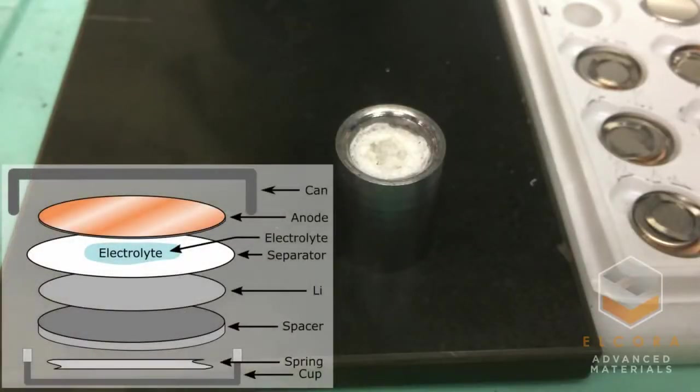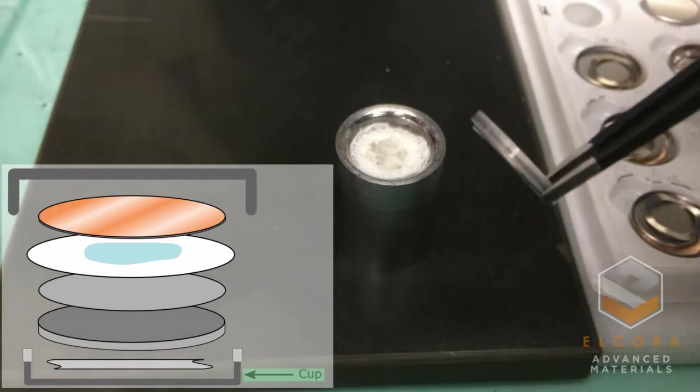The type of cell I'm assembling is called an anode half cell. I'll tell you about each of these components as I stack them onto the crimping die one by one.